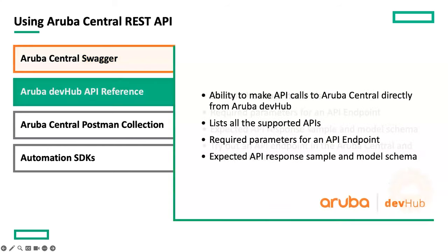Next, we have the Aruba Dev Hub API reference guide, located within the Aruba Dev Hub — the developer resource the automation team has developed for HP Aruba products. It features a getting started section, automation guides, API references, and a code exchange. Similar to Swagger, in the API reference section you can see documentation for all supported APIs, details on required parameters and expected responses. Additionally, you can make API calls directly from the API reference page on Dev Hub without logging into the Aruba Central application — as long as you have a valid access token and select the correct base URL.